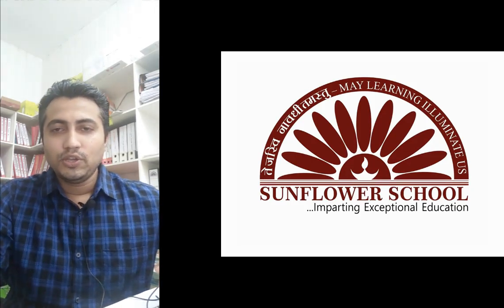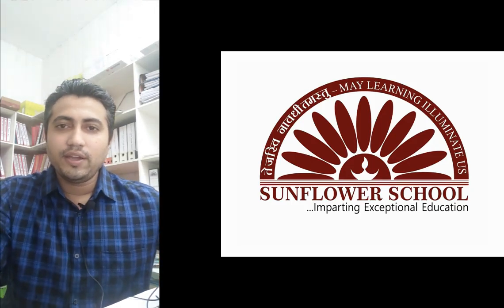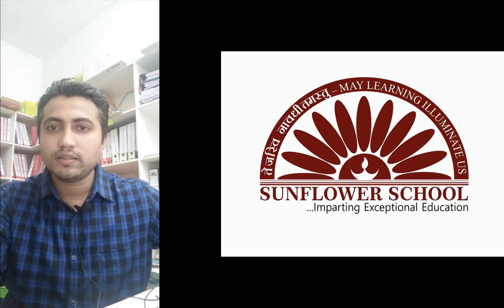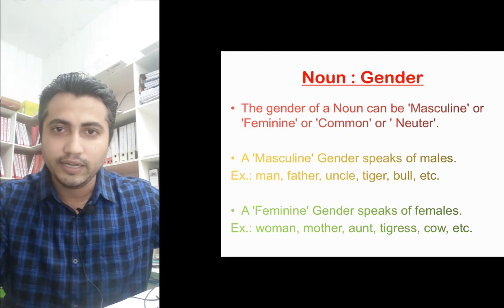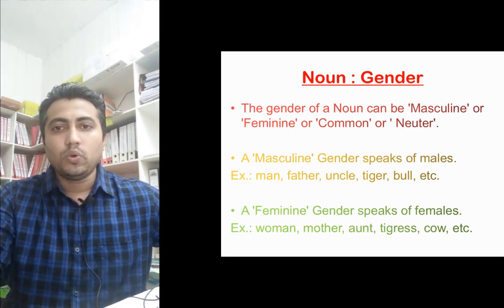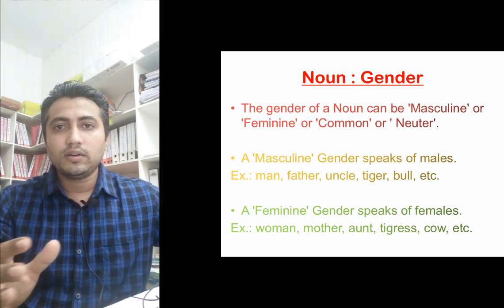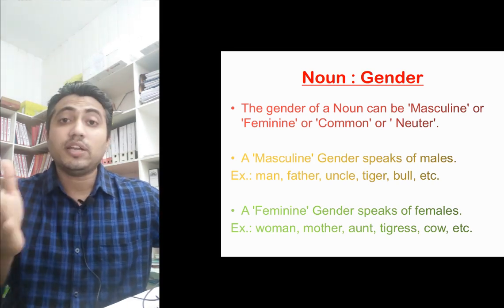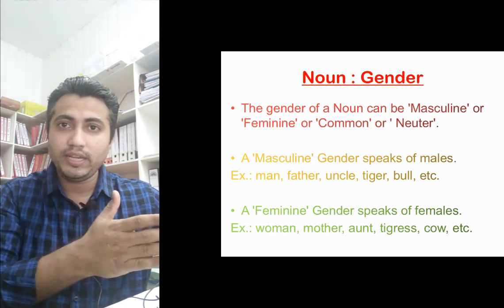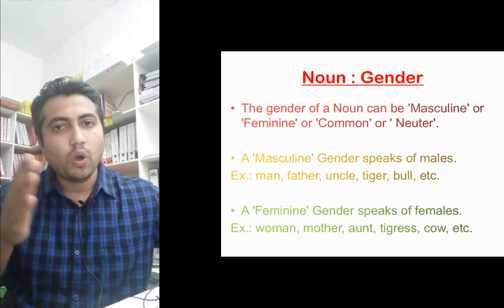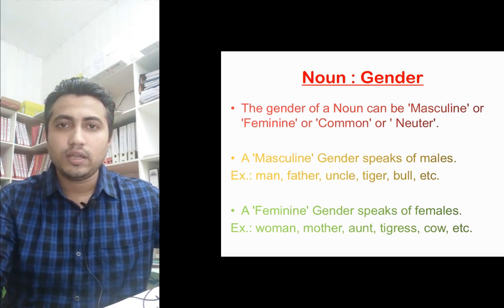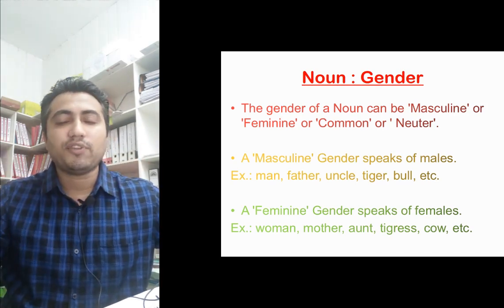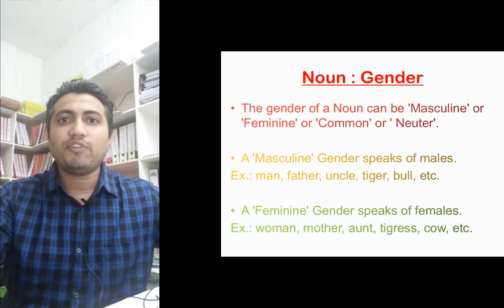Good morning students. Today we'll be going ahead with a new topic called noun gender. The different genders of a noun are masculine, feminine, common, and neuter. Let us first try to understand what these different types of gender are.